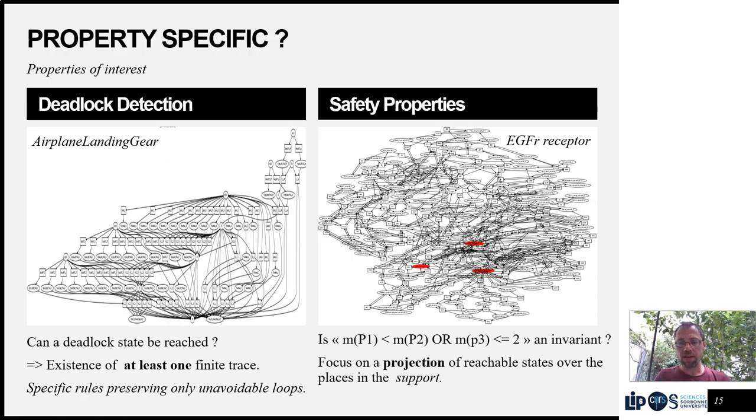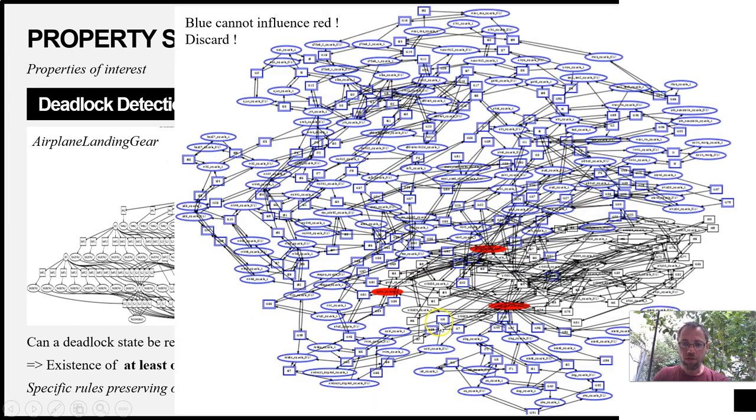On the right here, we can see a model where only a few places are interesting with respect to the invariant. We can use another algorithm called the prefix of interest to compute these interesting places, here the set in black, and simply discard all this blue part of the net.